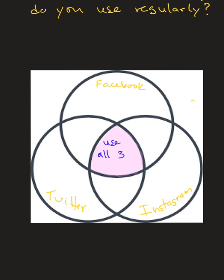Now let's shade this section here. As I shade this, notice there is some overlap of two circles — which two circles are overlapping? It's Facebook and Instagram overlapping, but it doesn't overlap with Twitter. So these people use Facebook and Instagram but not Twitter.